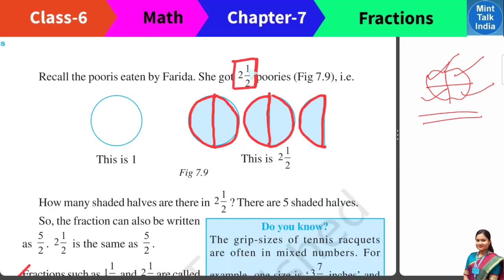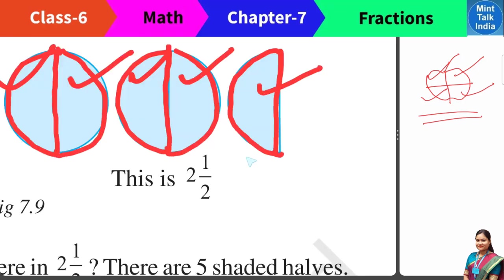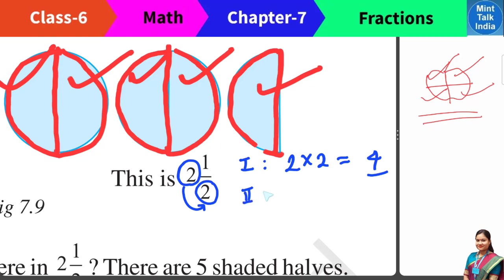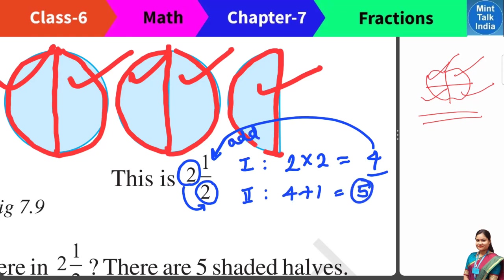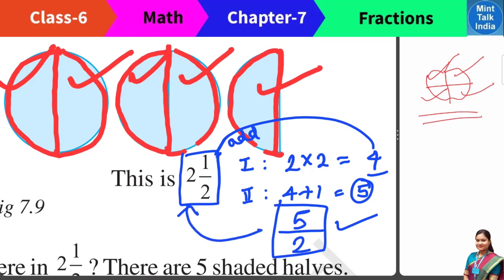If I ask you, how many equal half-portions does 2 and a half equal? Since we have half portions, we divide all the whole into half portions and count: 1, 2, 3, 4, 5 — total 5 halves. And because the denominator is 2, we write 2 in the denominator. Step 1: multiply the whole number and the denominator — 2 multiplied by 2 is 4. Step 2: add 4 to the numerator — 4 plus 1 is 5. Write this 5 in the numerator and the denominator stays as is. This way we convert a mixed fraction into an improper fraction.